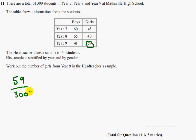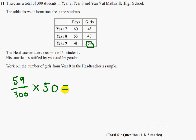So 59 out of 300 are Year 9 girls. The sample is of 50 students, so out of those 50 that proportion should be Year 9 girls. So 59 out of 300 multiplied by 50.